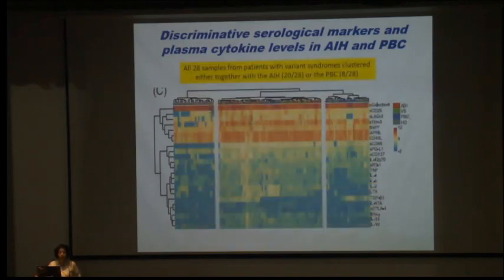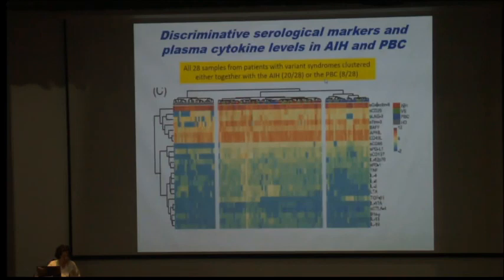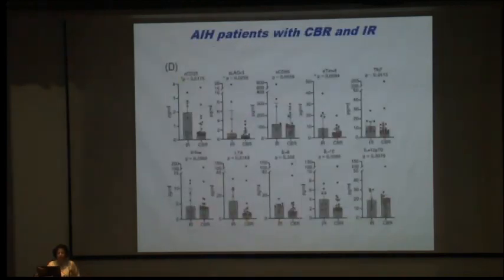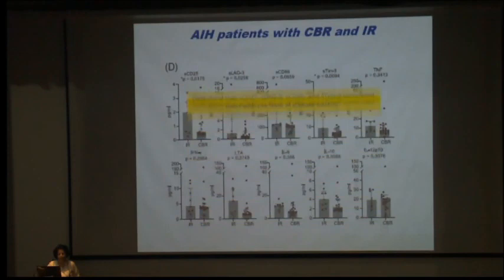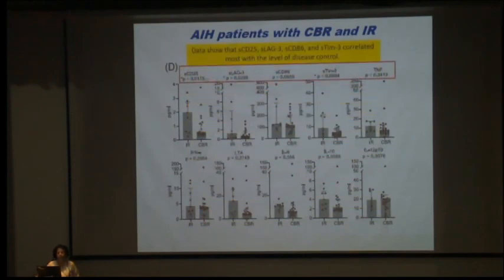All 28 samples from patients with variant syndrome clustered either together with AIH or together with PBC — not independently. For AIH patients with complete biochemical response versus no response, they found that soluble CD25, soluble LAG-3, soluble IL-6, soluble TIM-3, and TNF were markers distinguishing incomplete response from complete biochemical response. They did not find significant differences between variant syndrome subtypes themselves.